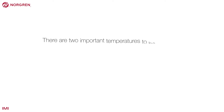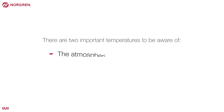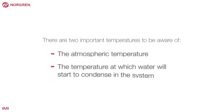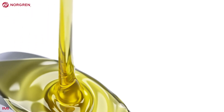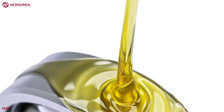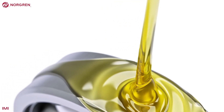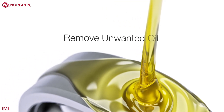So there are two important temperatures to be aware of in and around a compressed air system: the atmospheric temperature and the temperature at which water will start to condense in the system. As well as removing water, we need to remove unwanted oil, usually from the compressor.